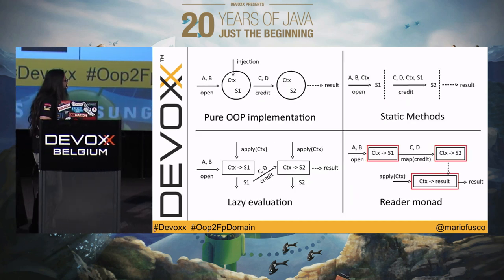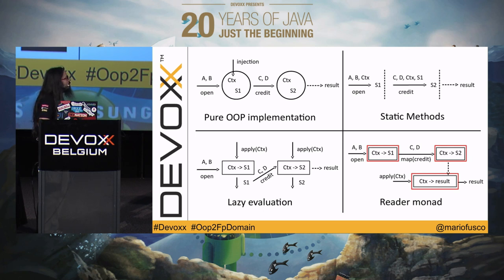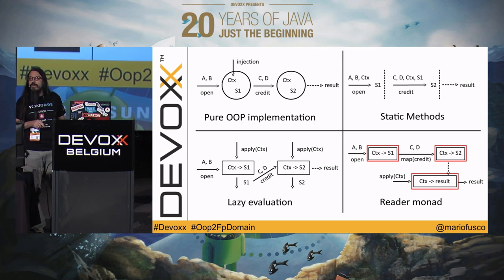Using the TriReader monad: I call open, which returns a function wrapped in the Reader monad. I can then just pass parameters using map of credit, map of credit again, and flatMap of debit. I'm returning this TriReader of a bank connection and account. As you can see, this is exactly what we had before — but I don't have to pass the connection everywhere. I encapsulate all that logic inside the monads. When I call apply passing a bank connection, the function is executed and I'm returned with the final result.